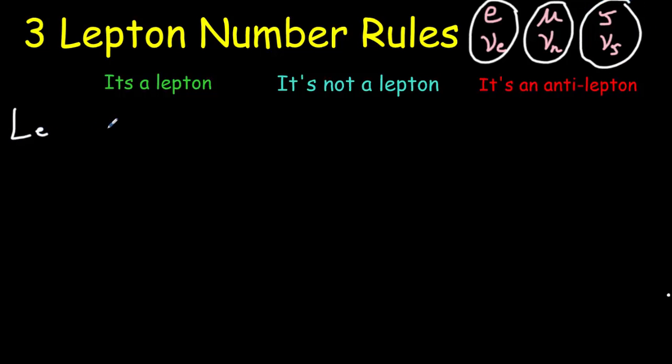So for the electron variety, if it is an electron or an electron neutrino, give it a one. If it's not, give it a zero. And if it happens to be an antielectron or an antielectron neutrino, give it a minus one. Do the same thing for the muon types. If it is, give it a one. If it's not, give it a zero. If it's anti, minus one. And the same thing for the tau leptons, both the neutrino and the tau particle. One if it is, zero if it's not, negative one if it's an anti.